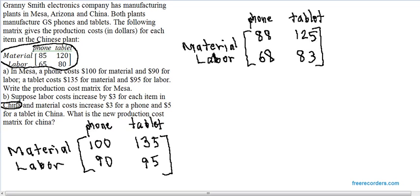Now, if you're wondering what this has to do with adding or subtracting matrices, I could have explained Part B as follows. Take the original production cost matrix for China, the one we were given. Add to it a matrix that gives the price increase.